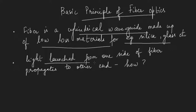When light is launched from one side of the fiber it propagates to the other end. The first question that comes to our mind is: what is the basic principle on which this propagation of light depends? The basic principle of the fiber is the very well-known phenomenon which you are all already familiar with — that is total internal reflection.